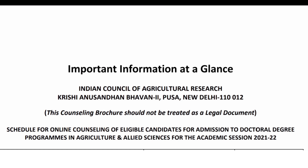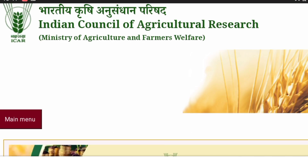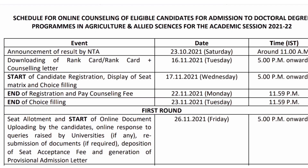In today's video we are discussing the first round of allotment, second round, third round, and the mop-up round. Every candidate should note the important dates. The announcement of scorecard by ICAR was on 23rd of October 2021, and the rank card for counseling was released on 16th of November 2021.